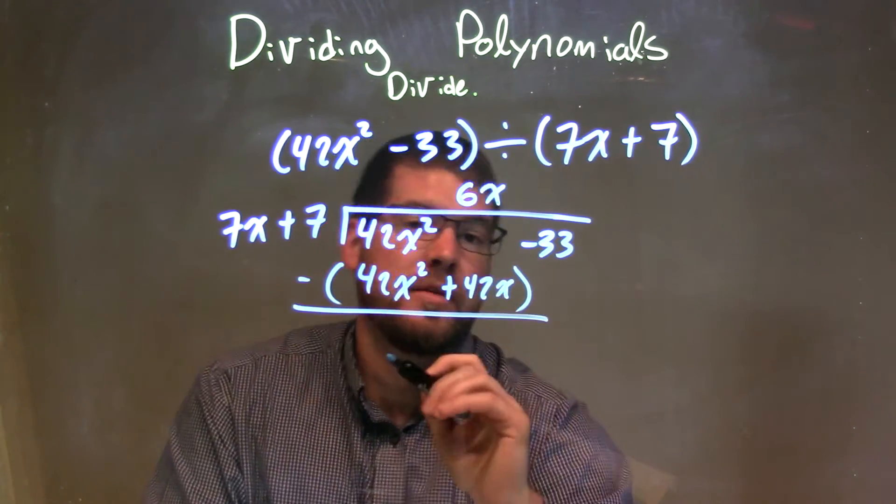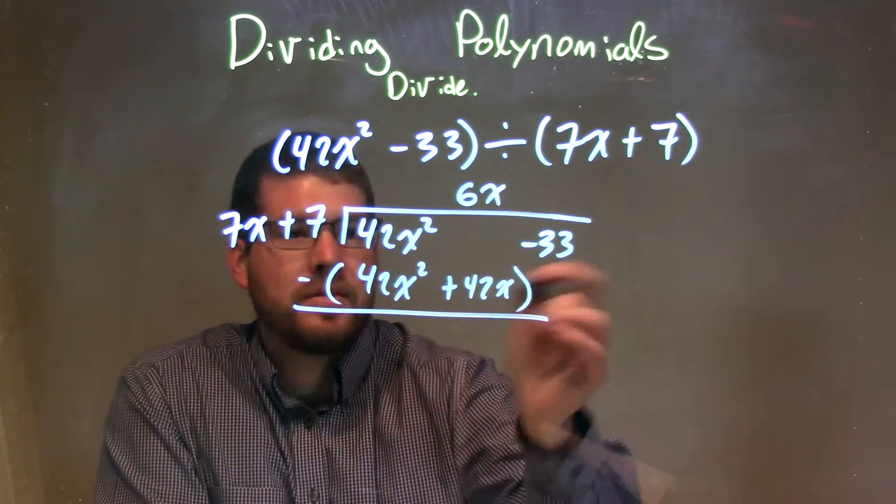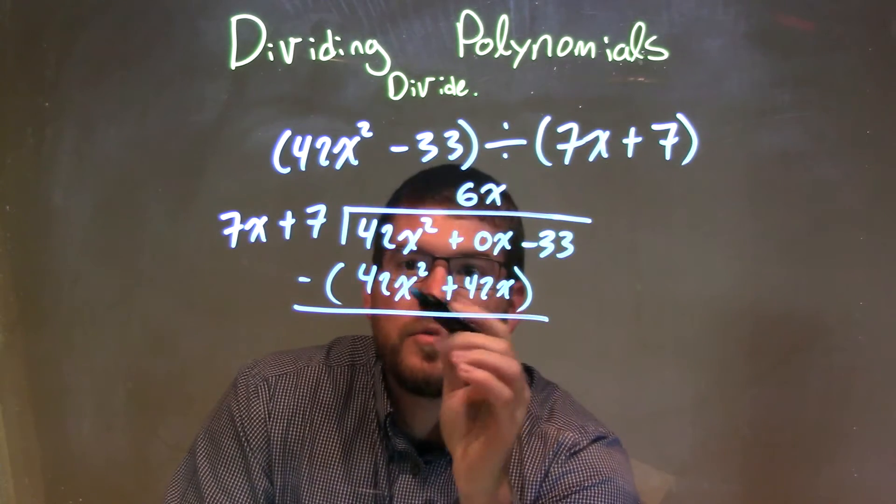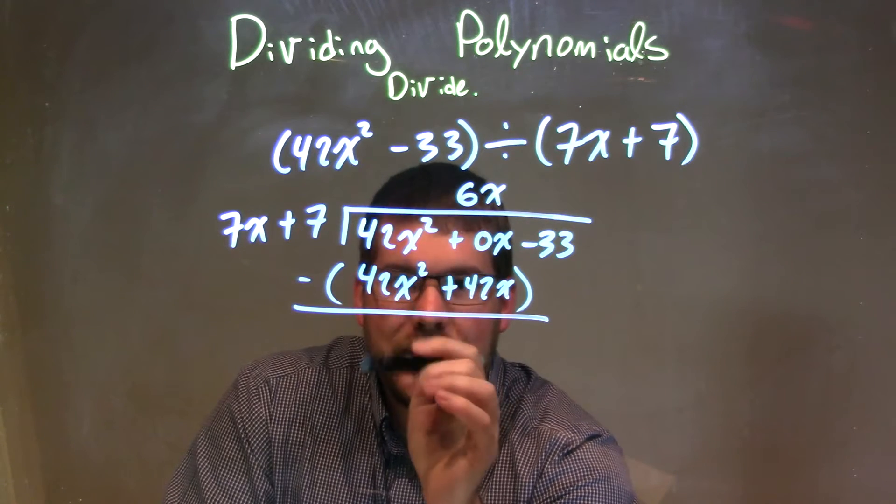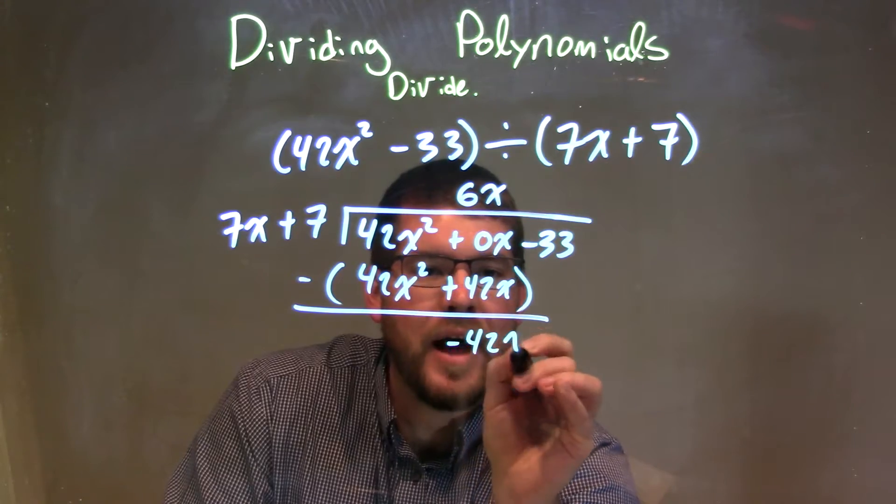And then remember, there's that 0 there, that 0, that space value there, 0x. And if you want to write it, let's go right here. It makes it a little easier, actually. So it's plus 0x right there. So we subtract them. So we have 42x squared minus 42x squared, and that gets 0. And then 0 minus 42x is a negative 42x.